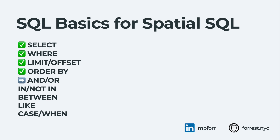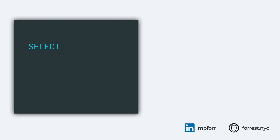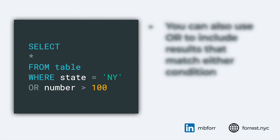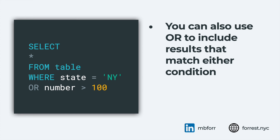Next, AND and OR statements — a different way to extend the WHERE clause. In this query, we select everything from our states table where the state equals 'NY', then add another condition: where the state equals 'NY' AND some number column is greater than 100. Any rows that meet both conditions will be returned. If you want a more inclusive approach, you can use OR — returning any row where the state equals 'NY' OR the number equals 100. You can chain as many ANDs and ORs as you want together.